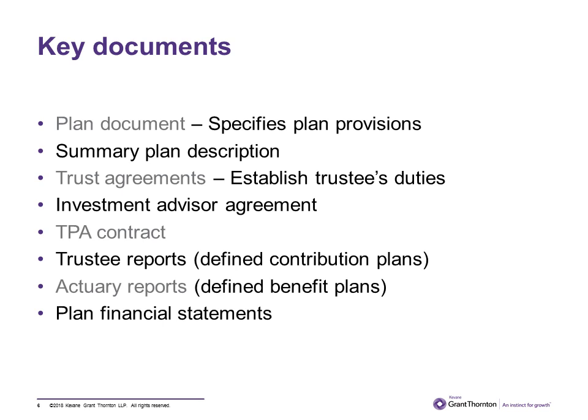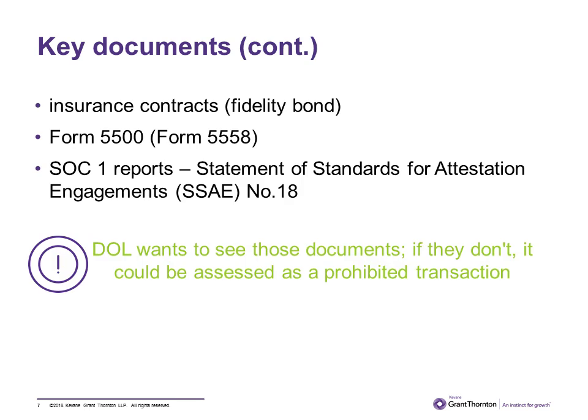Financial statements should be prepared by management or with auditor assistance if necessary. Insurance contracts related to the fidelity bond should be safeguarded, and employers should ascertain that the policy issuer is included in the list approved by the Federal Treasury Department. The Form 5500 is the annual form filed with the Department of Labor. It is due seven months after the end of the plan year, with an additional non-automatic extension of two and a half months.